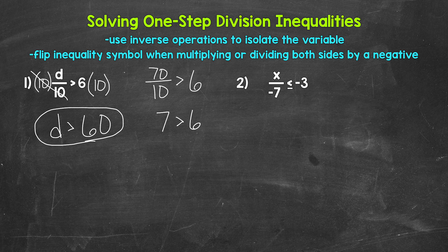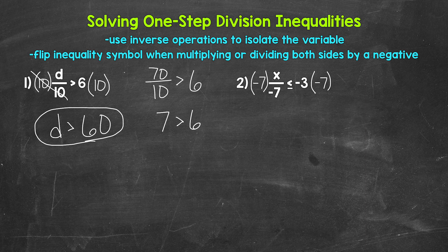Let's move on to number 2, where we have x divided by negative 7 is less than or equal to negative 3. So let's isolate x. It's being divided by negative 7, so we need the inverse operation — that's multiplication. So let's multiply the left side by negative 7, and that means we need to multiply the right side by negative 7. Now remember, when we multiply or divide both sides by a negative, the inequality symbol flips.